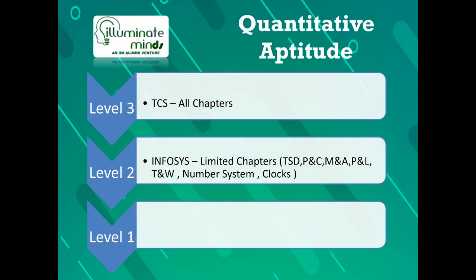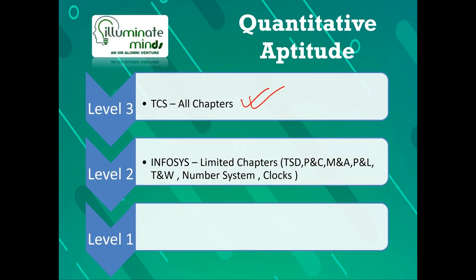Now let's talk about the quantitative aptitude chapters. For TCS, you need to prepare all chapters of quantitative aptitude — any question from any chapter can appear. For Infosys, only limited chapters are tested: time, speed and distance; permutation and combination; mixture and allegation; profit and loss; time and work; number system; and clocks. So to summarize: if you are good in verbal, Infosys is probably the best choice. If you are very good at quantitative aptitude, TCS would likely be the easiest to crack.